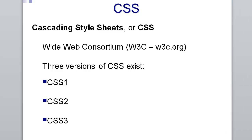Cascading Style Sheets, or CSS, is a web standard put forth and supervised by the World Wide Web Consortium, or W3C. This is also the governing body involved with HTML, XHTML, and HTML5. There are three versions of CSS.